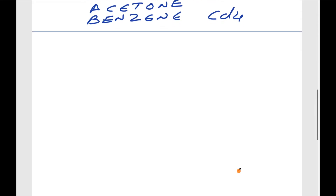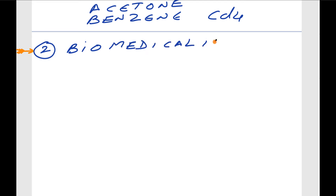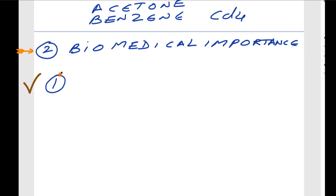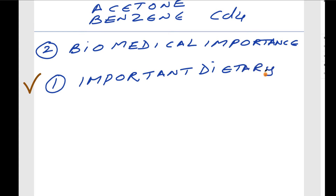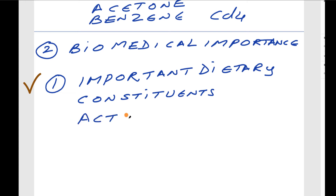Now we will take up the second objective: biomedical importance. The first point is that lipids are important dietary constituents. Along with carbohydrates and proteins, lipids are major nutrients — they act as fuel. They are very rich in energy: one gram of lipid gives approximately 9.5 kilocalories, compared to 4.0 kilocalories per gram of carbohydrate.